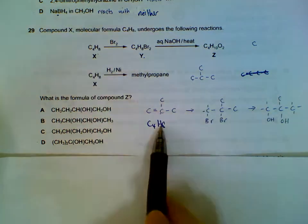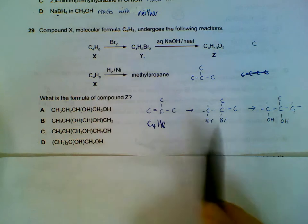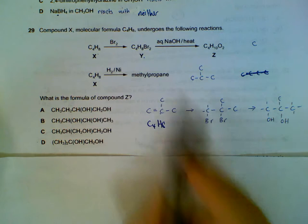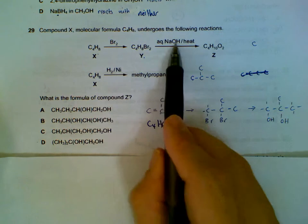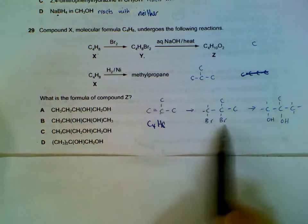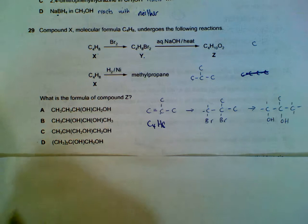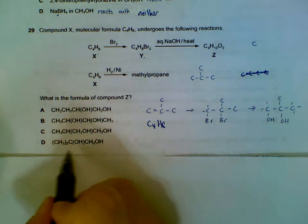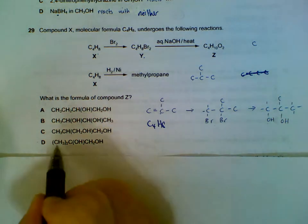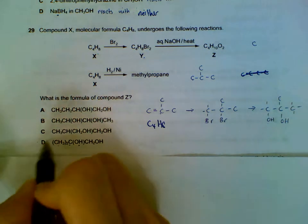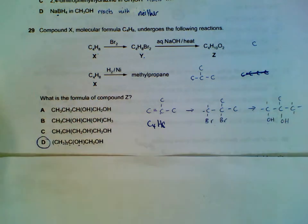Once you know this structure, we add bromine across the double bond. Then we replace the bromine with OH in the nucleophilic substitution step to get the product. Compound Z will have the structure: CH3, CH3, CH3, C bonded to CH2OH.